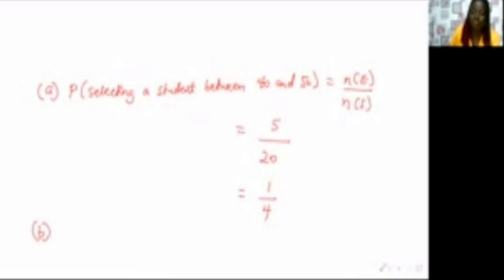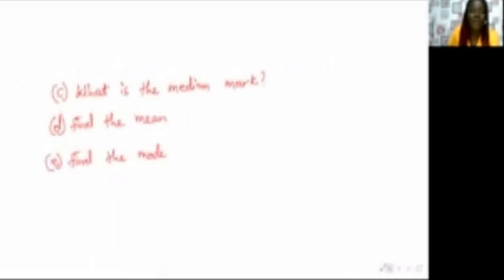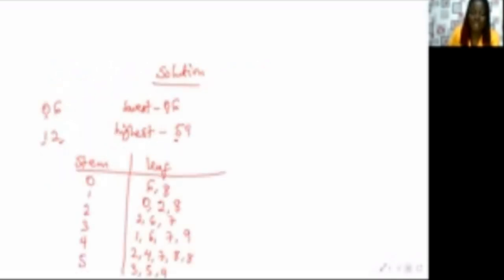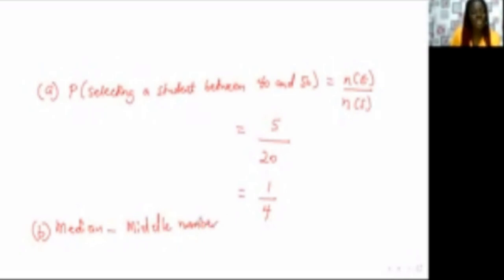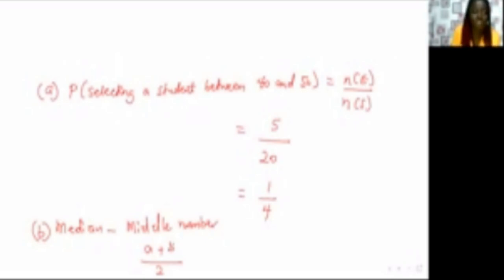The next part of the question: what is the median mark? The median is always equal to the middle number. If you are fortunate and get a single digit in the middle, take that as your median. But when you get two digits in the middle, find the average of those two digits.